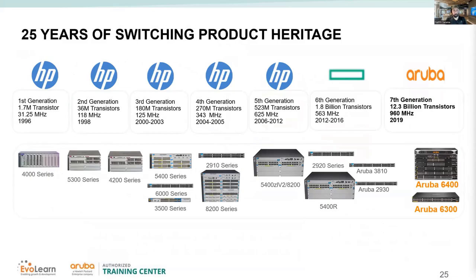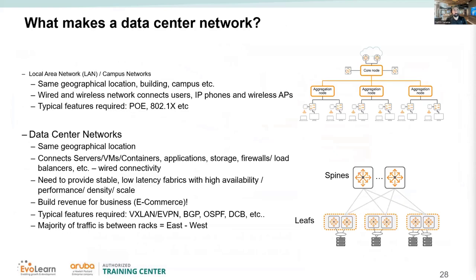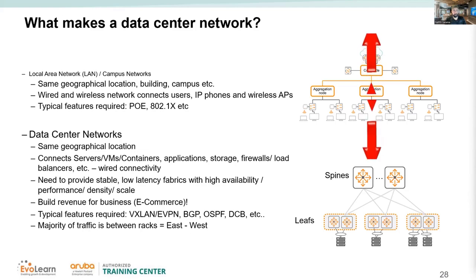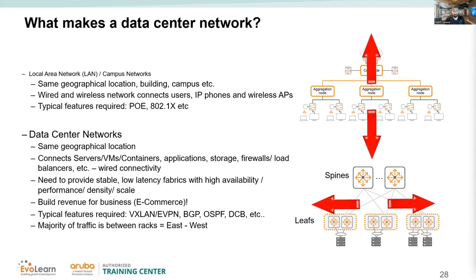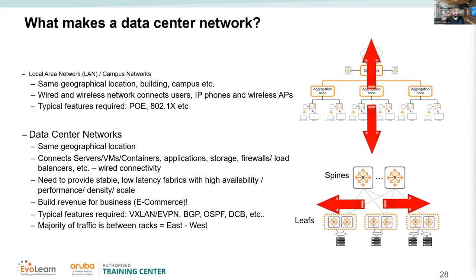One important design consideration: networks in data center behave differently from campus networks. In a campus, traffic flows north-south; in a data center, traffic flows east-west. That is why spine-and-leaf is used in data centers — to achieve redundancy without loops. Spine-and-leaf gives you redundancy while avoiding loop-prevention mechanisms that would otherwise cause issues.